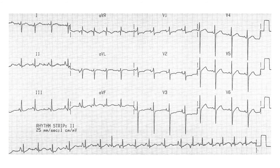Another example: you can see that persistent S wave — that negative deflection — throughout the precordium. V1 is upright, which should key you in to an abnormality because V1 is supposed to be negative. This is another patient with clear pulmonary disease and RV enlargement. Not only do you have that persistent S wave indicating rotation of the heart, but looking at the limb leads, the QRS is most positive in lead III — right axis deviation. Then V1 shows a positive wave when it shouldn't, and those two things together indicate the RV is generating extra electricity, indicating either acute RV strain or RV hypertrophy. In this patient pre-diagnosed with end-stage COPD, we can assume that is their normal ECG presentation with a hypertrophic right ventricle.